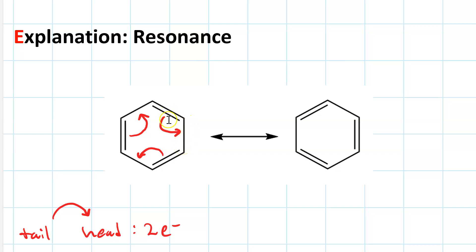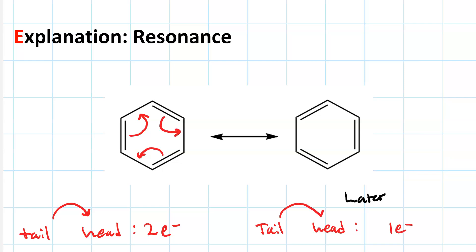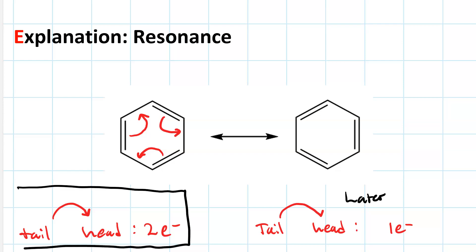This curved arrow moves this pi bond from the topmost and top-right to the two rightmost carbons. Incidentally, if you have a curved arrow with a single barb at the head, that's called a fish hook, and it represents the movement of one electron. We'll get to one-electron processes later. For now, focus on the double-barbed arrow.